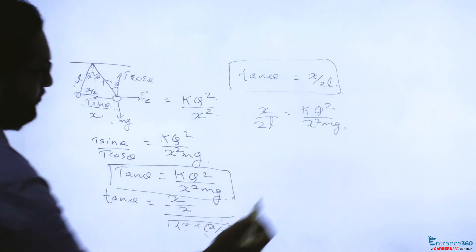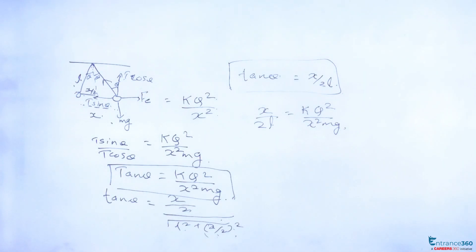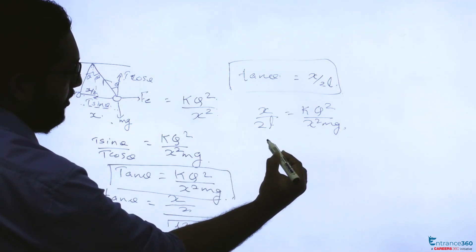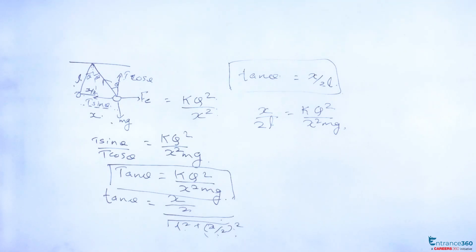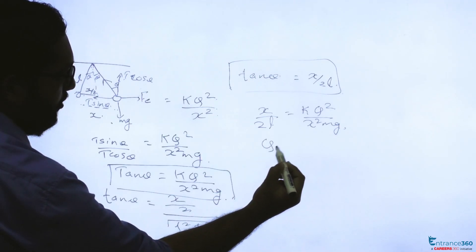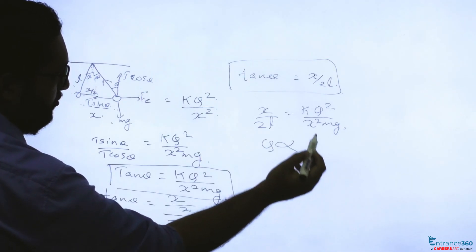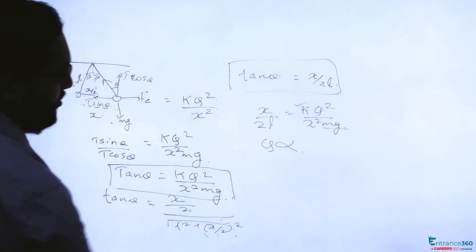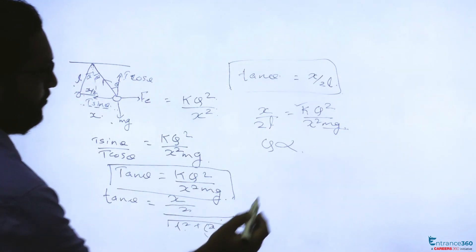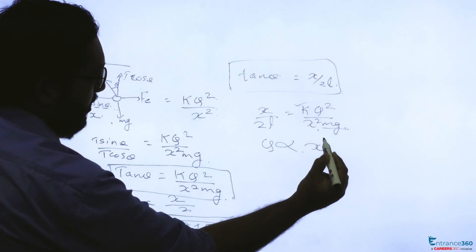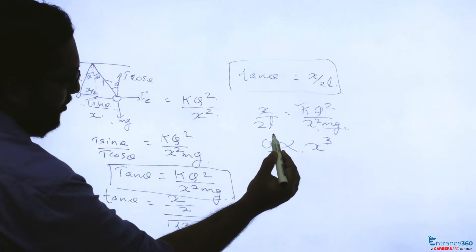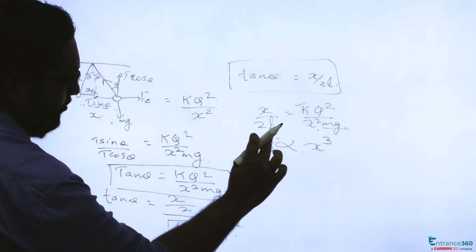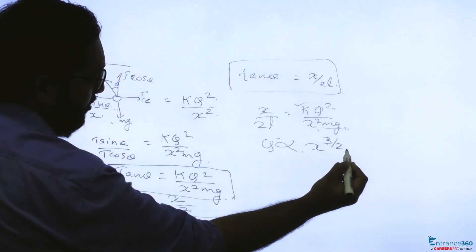Equating both, x by 2L equals k q square by x square mg. And our charge q can be written as, or q is proportional to, this is a constant value, this is also a constant value, so q is proportional to x cube. q square is proportional to x cube, so q is proportional to x raise to 3 by 2.